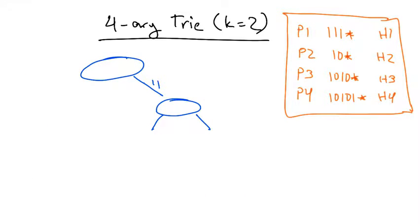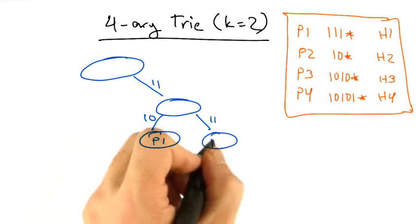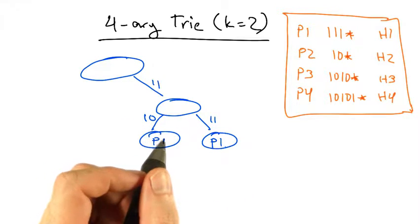So if we take 1, 1, and now we take 1 star, that's 1, 0 and 1, 1. Now we basically have to put p1 in two places in the tree.